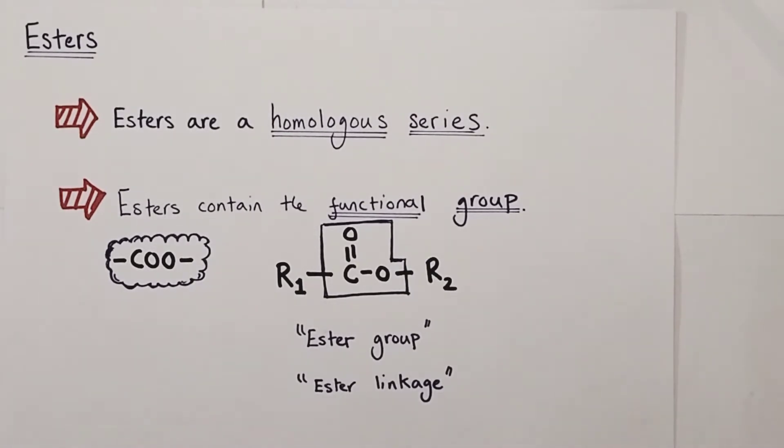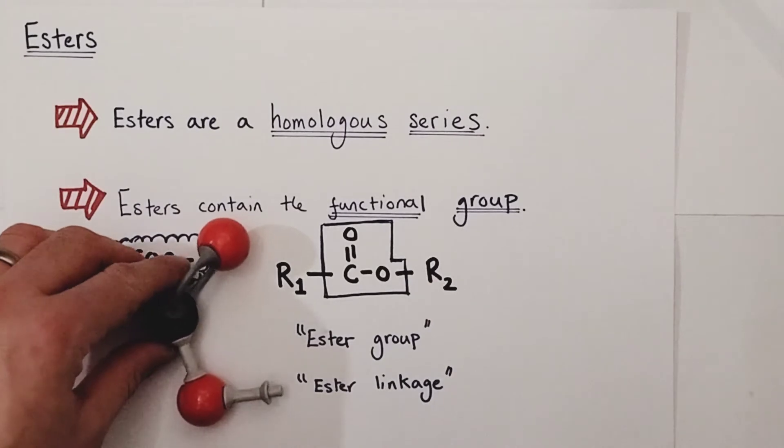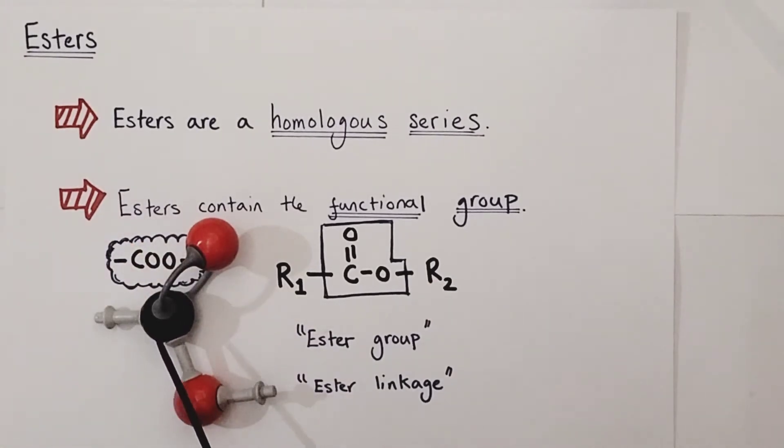It would look a bit like this molecular representation here. It's a carbon with a double covalent bond to an oxygen atom, a single covalent bond to a second oxygen atom, and these two covalent bonds leading off to the left and right represent the rest of the alkyl chain. You find this ester group or ester linkage in the middle of the molecule, not at the end of the molecule.